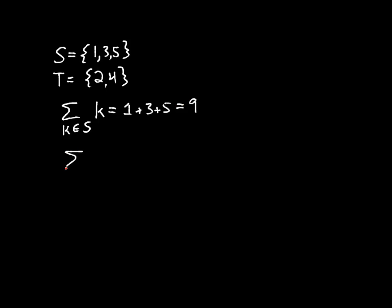If I were to sum over all m in T of m squared, so that would be the sum of the squares. This would just have two terms, because there's two elements of the set. And that would be 4 plus 16, which is 20.